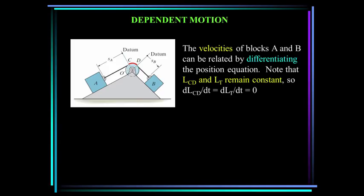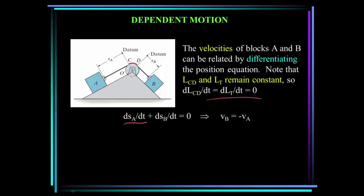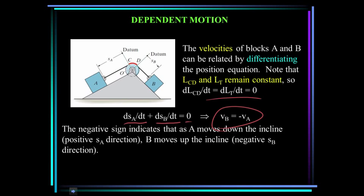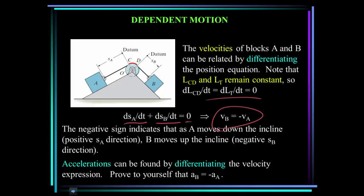The velocities of blocks A and B can be related by differentiating the position equation. Note that LCD and LT remain constant, so their derivatives are zero. The rate of change of SA with respect to time plus the rate of change of SB with respect to time equals zero. Therefore, the velocity of B equals negative the velocity of A. The negative sign indicates that as A moves down the incline, B moves up the incline. Accelerations can be found by differentiating the velocity expression, giving the acceleration of B equal to minus the acceleration of A.